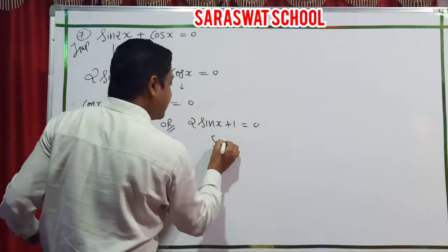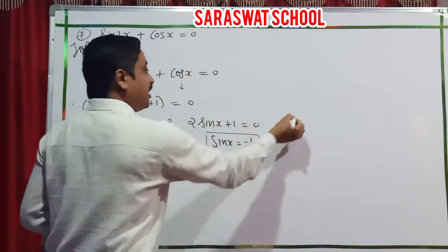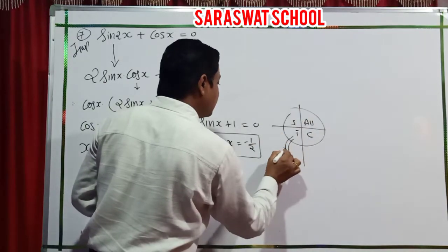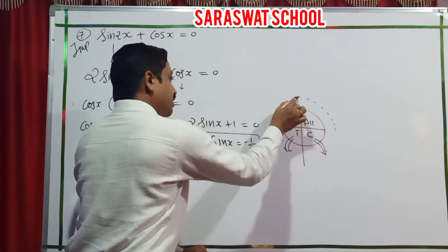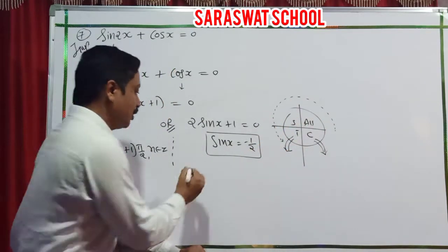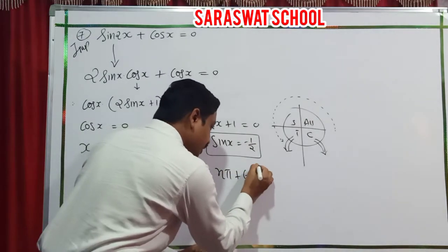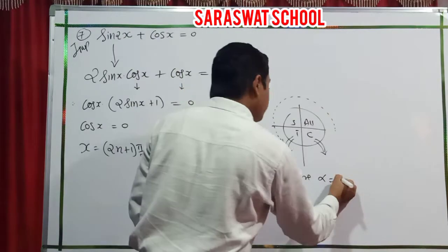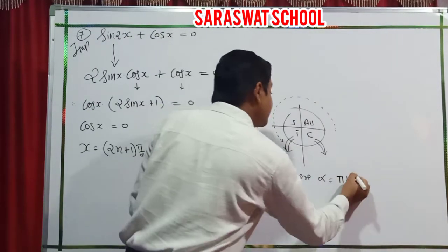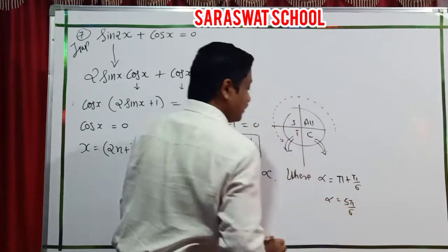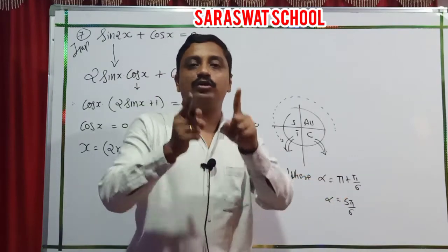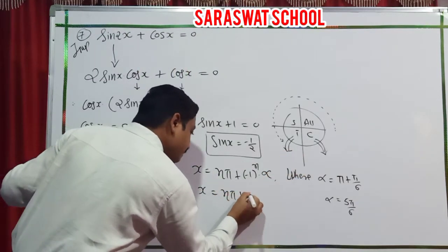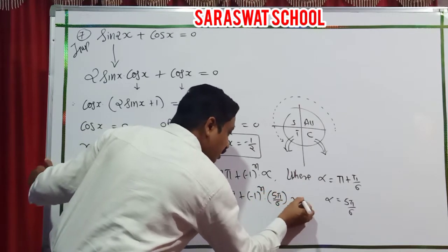For sin x equals minus half: sine is negative in the third and fourth quadrants. When sine is half, the angle is pi by 6. The least angle in the third quadrant is pi plus pi by 6 equals 7 pi by 6. So the general solution: x equals n pi plus minus 1 raised to n into 7 pi by 6, where n belongs to Z.